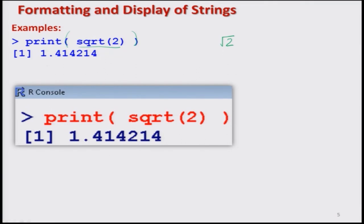For example, if I want to print the square root of 2, I can simply write print(sqrt(2)), which is the usual command for finding the square root. The answer comes out as 1.414214 and so on. R will give you a certain number of digits, automatically decided by R. There is another option where I can also control the number of digits after the decimal point.